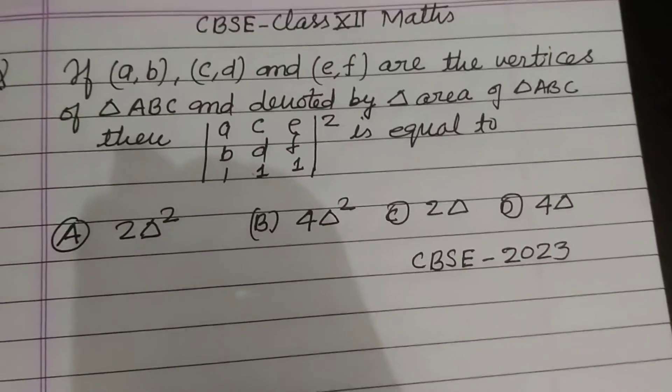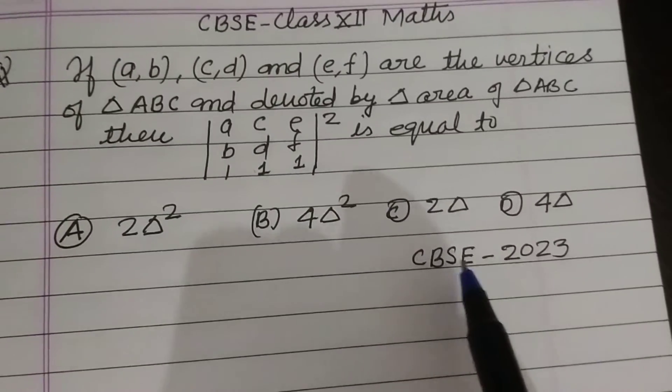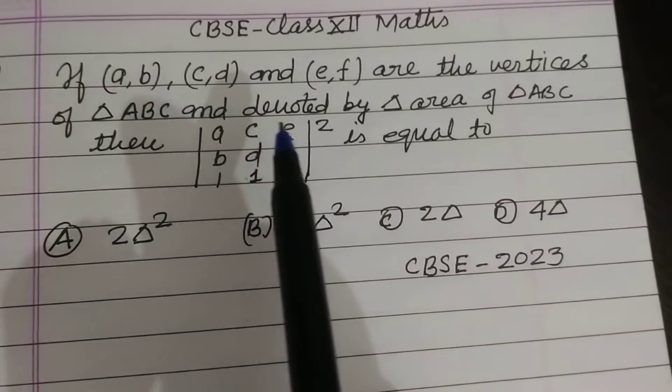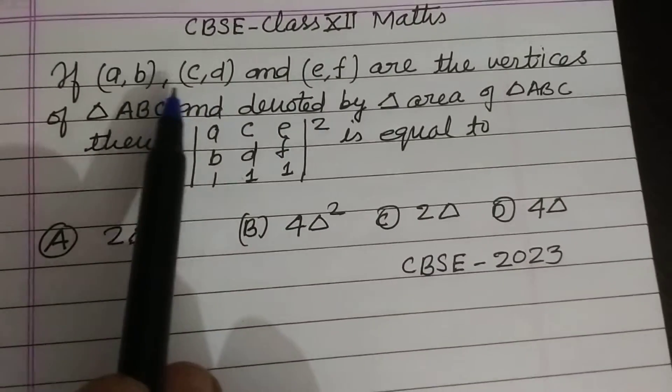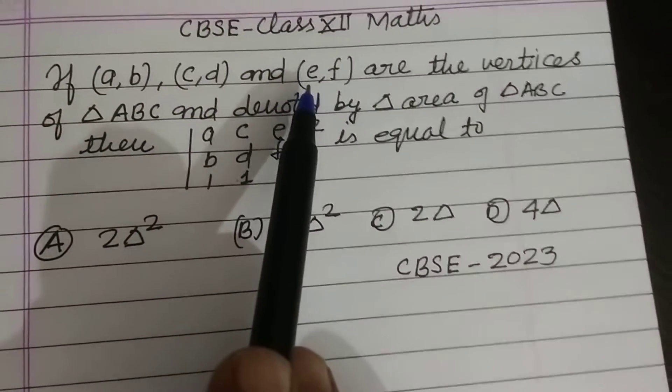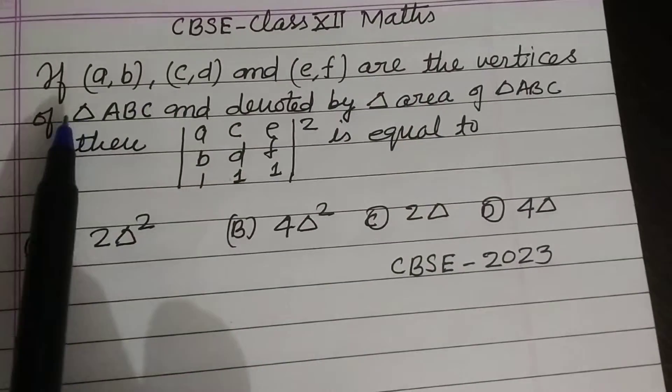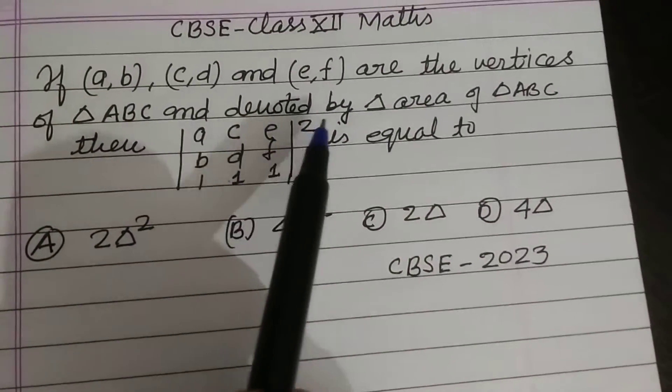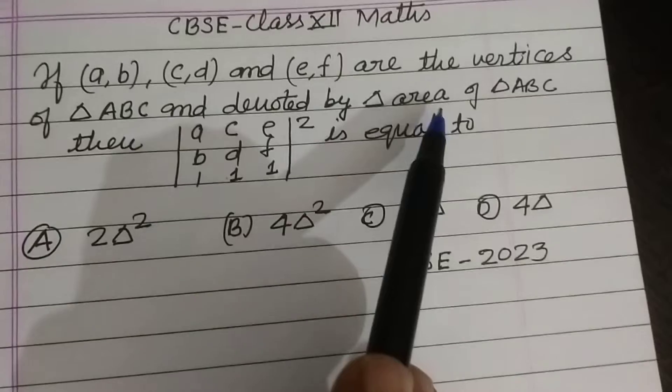Hello students, warm welcome to this YouTube channel. Question from CBSE Board 2023 Class 12 Math: If (a,b), (c,d), and (e,f) are the vertices of triangle ABC and denoted by delta area of triangle ABC, then...